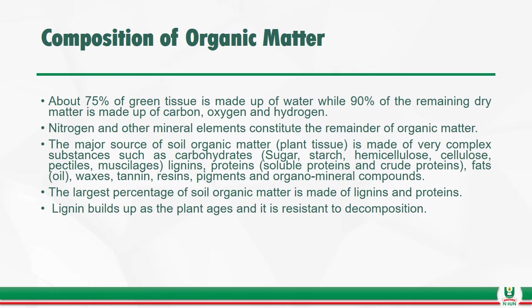What is the composition of organic matter? About 75 percent of green tissue is made up of water, while 90 percent of the remaining dry matter is made up of carbon, oxygen, and hydrogen. Nitrogen and other mineral elements constitute the remainder of organic matter. The major source of soil organic matter — plant tissue — is made up of very complex substances such as carbohydrates (including sugars, starch, hemicellulose, cellulose, pectins, and mucilages), lignin, proteins, fats, oils, waxes, tannins, resins, pigments, and organic mineral compounds.